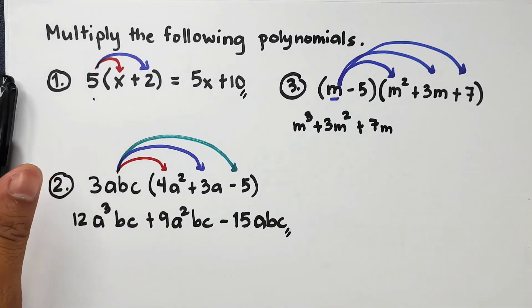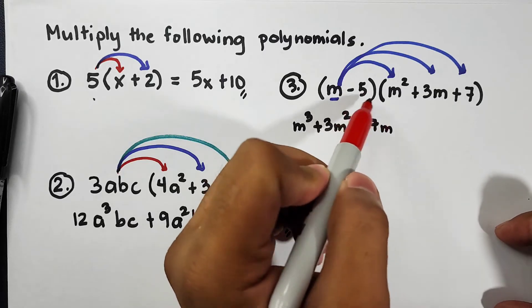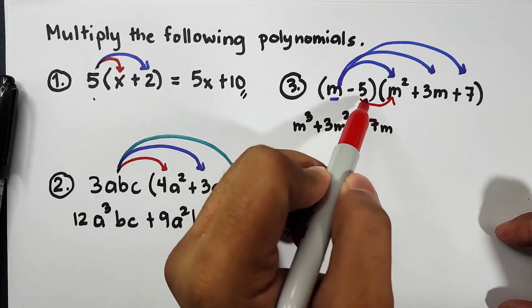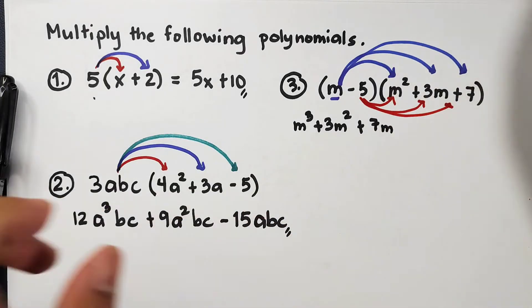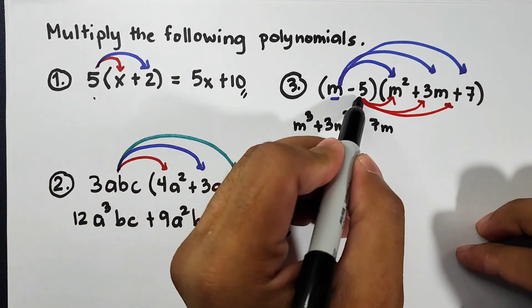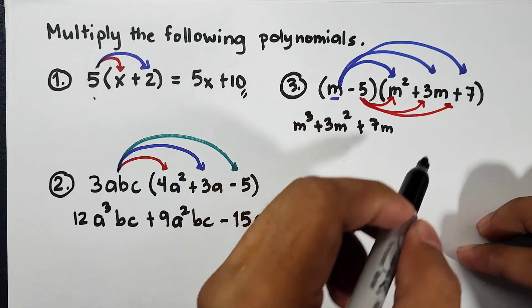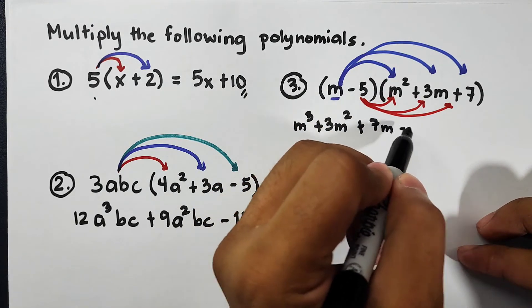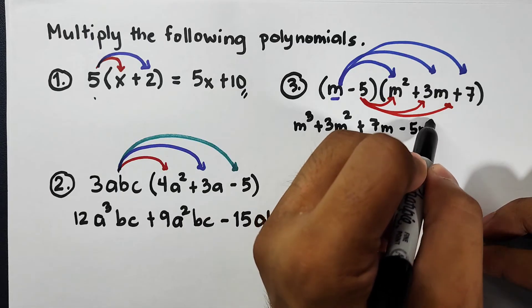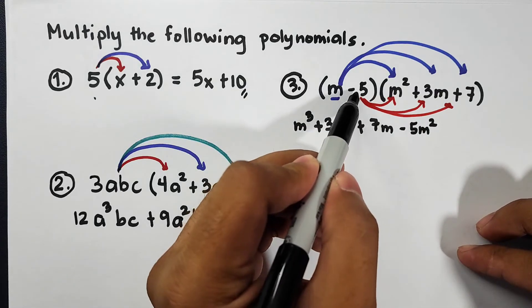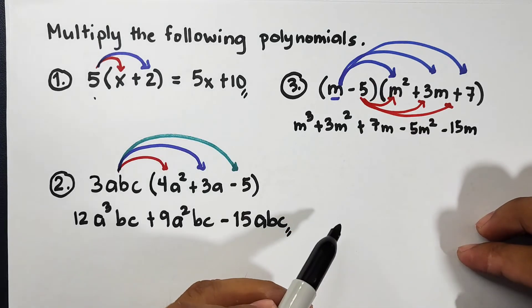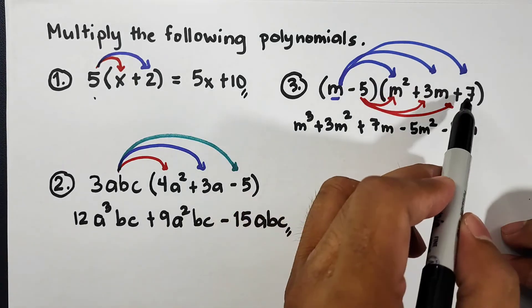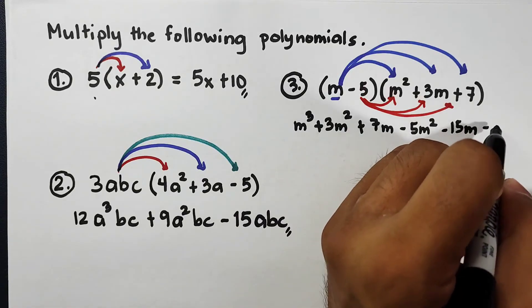So I will use another color to distribute negative 5. What will happen is that we will multiply negative 5 times m², that is equal to negative 5m². Negative 5 times 3m, that is negative 15m. And lastly, negative 5 times 7, that is negative 35.